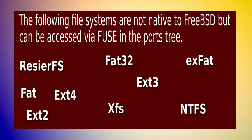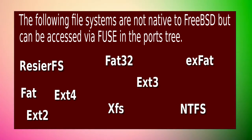FreeBSD can also read and write to file systems from other operating systems, in particular Linux and Windows. You can read and write to EXT2, EXT3, and EXT4, as well as NTFS, FAT, FAT32, exFAT, and XFS.